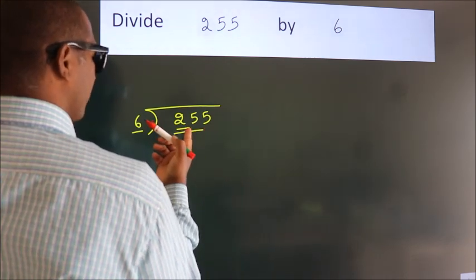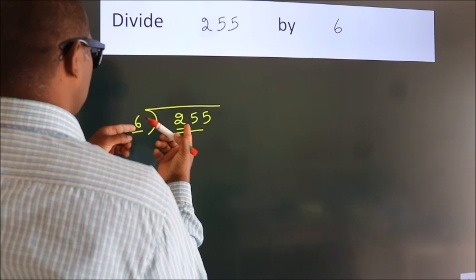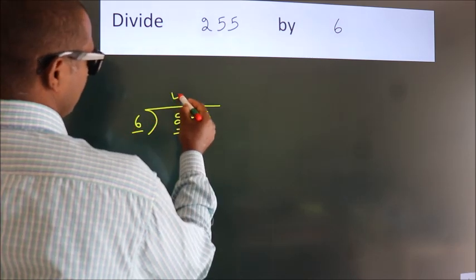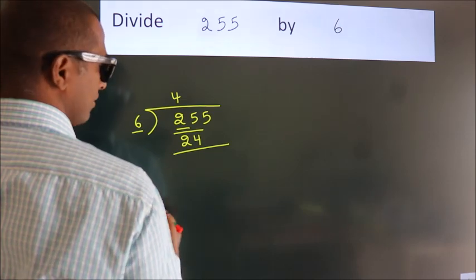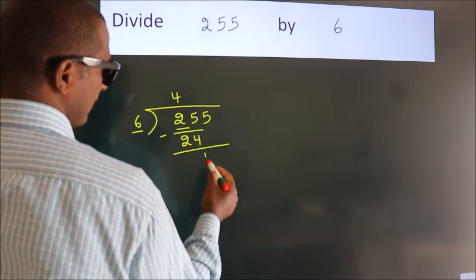A number close to 25 in 6 table is 6 fours 24. Now we should subtract, we get 1.